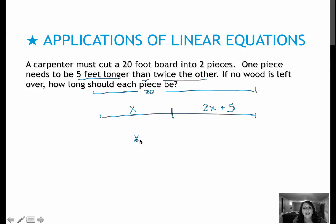Those two pieces, x plus 2x plus 5, should add to 20 total feet since no wood is left over. Now I will combine like terms on the left: 1x plus 2x is 3x. Then I will algebraically solve to get x by itself, which gives me x equals 5.